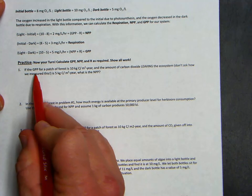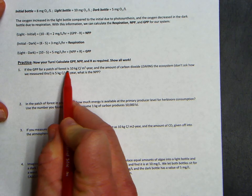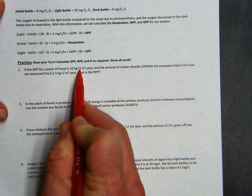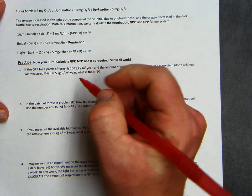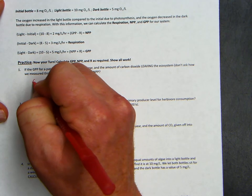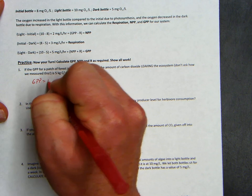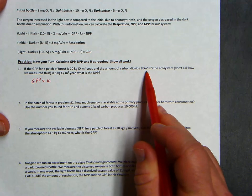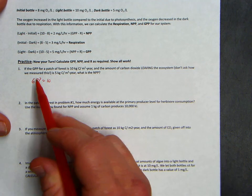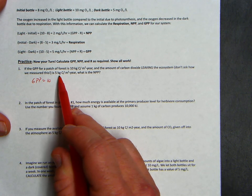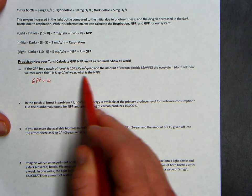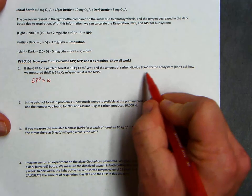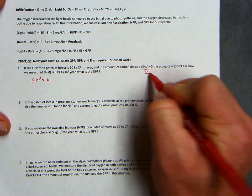Okay, so here we go with number one. If the GPP for a patch of forest is 10 kilograms of carbon per square meter per year, I'm going to write notes to myself, GPP equals 10. I'm just going to keep it simple for myself. And the amount of carbon dioxide leaving the ecosystem is 5 kilograms of carbon per square meter per year. What's the NPP? So that part that's leaving, that would be the respiration.